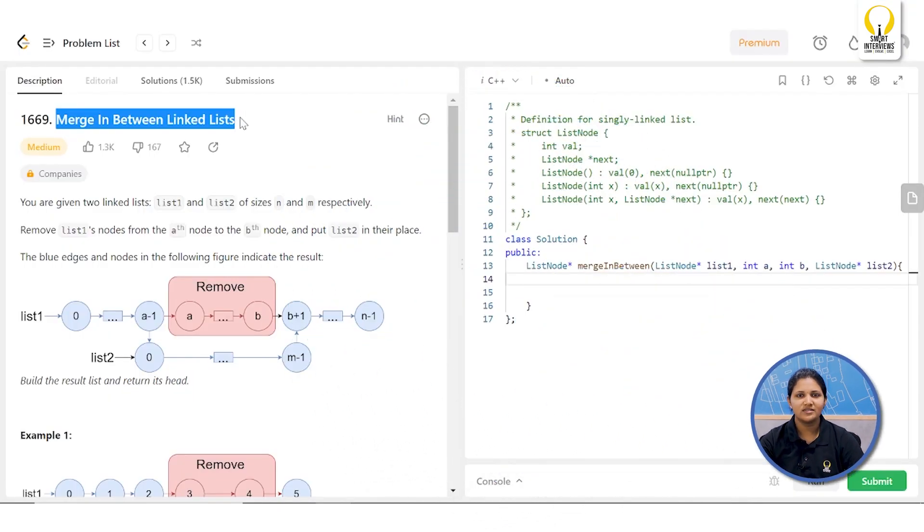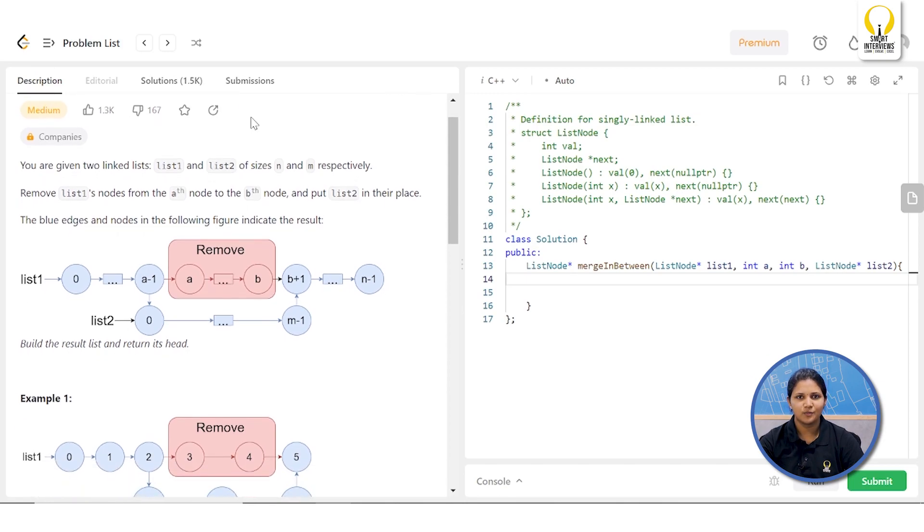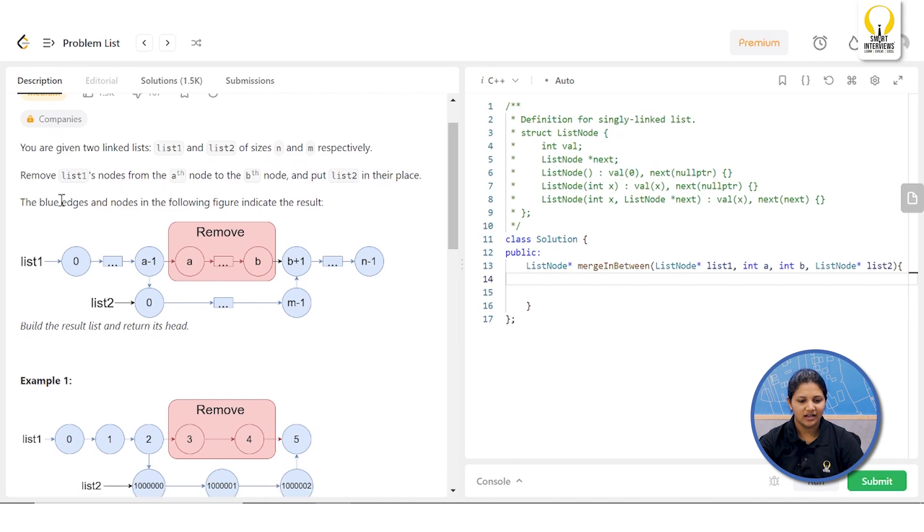I hope you did the same. So here the problem name is merge in between linked lists. Before continuing with the explanation part, I would like to go through the problem statement notes. Here you are given two linked lists list one and list two. The objective is in list one, you have to remove the nodes from A to B. In that place you have to insert your list two.